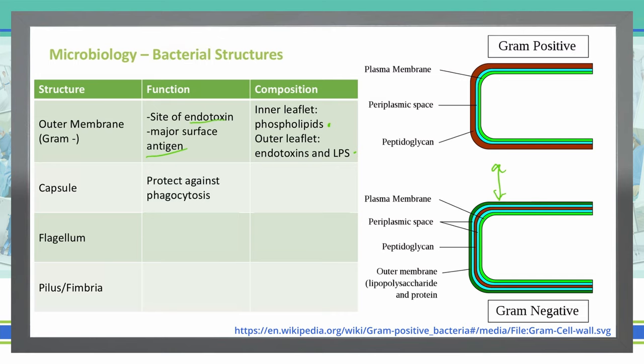Bacteria also have capsules, and these are present in both gram-negative and gram-positive bacteria. They protect the bacteria from phagocytosis. The capsule is made up of polysaccharides, as well as some rare proteins.